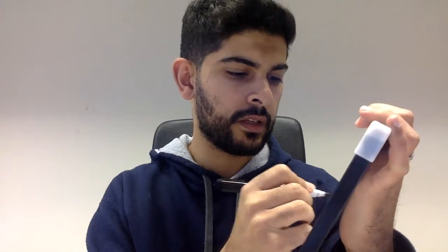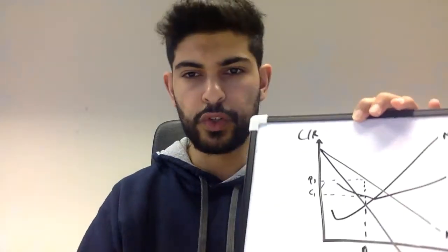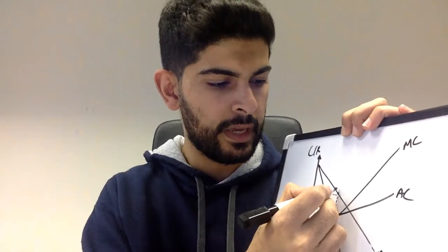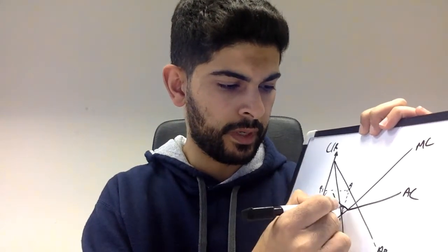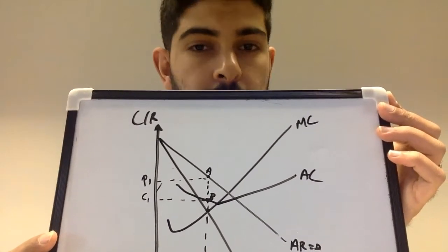To show supernormal profits, draw the AC curve and read up from Q1 to get cost C1. Label the initial supernormal profit area as P1–A–B–C1. Now, if monopsony power increases, variable costs fall, which shifts both MC and AC downward. Draw the new MC curve lower — this is MC2. Before shifting AC, find the new quantity Q2 and new price P2 where MC2 intersects MR.